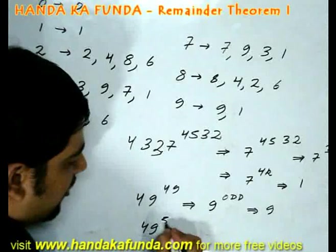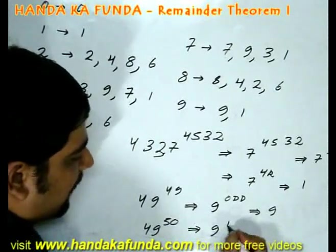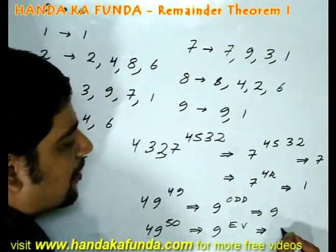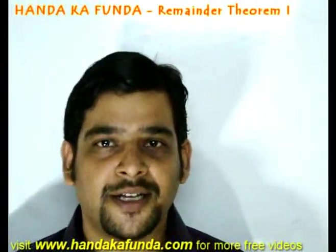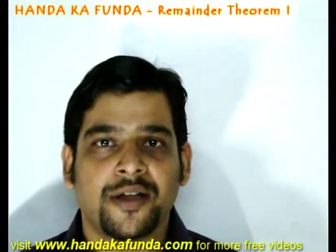If it was 49 to the power of 50 or 9 to the power of an even power, then my answer would have been 1. Stay with us to continue the discussion on remainder theorem.